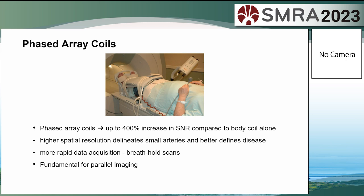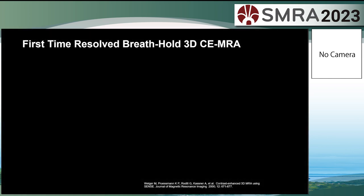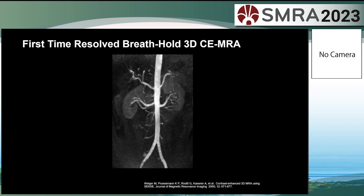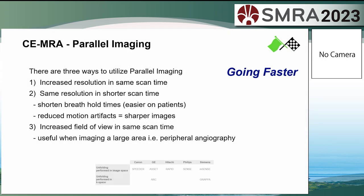The next part of the history of CE-MRA is phased array coils, which allowed us to get much higher SNR — higher spatial resolution for seeing smaller arteries, more rapid acquisition, and breath-hold scans, for example for the renal arteries. Parallel imaging is completely based on the use of phased array coils. This is what I think is the first time-resolved breath-hold 3D contrast-enhanced MRA, showing myself holding my breath during infusion of 30 mils of OmniScan gadolinium contrast agent, published around the turn of the century.